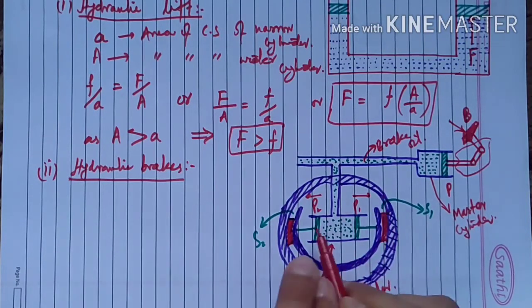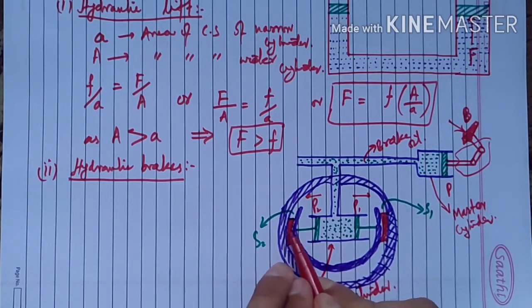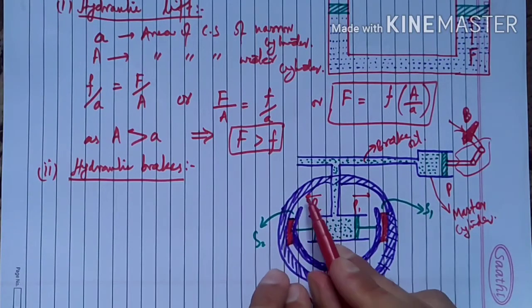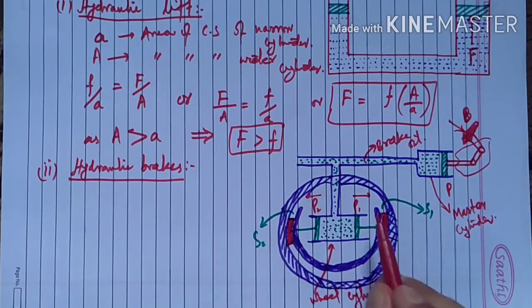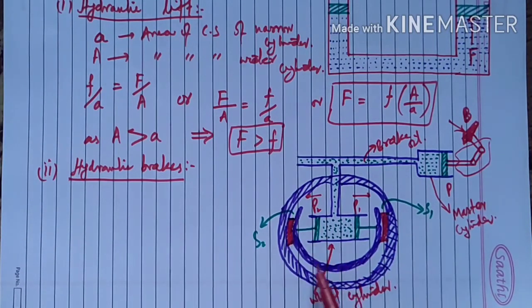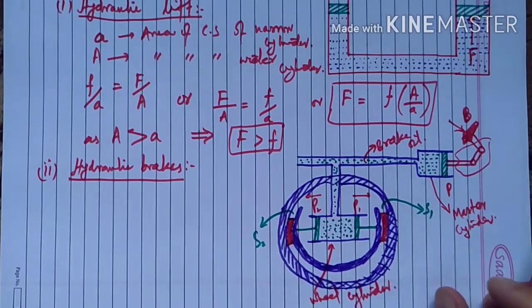The pistons P1 and P2 push the brake shoes outward, and the brake shoes get attached to the inner rim of the wheel, creating friction that slows down the wheel.